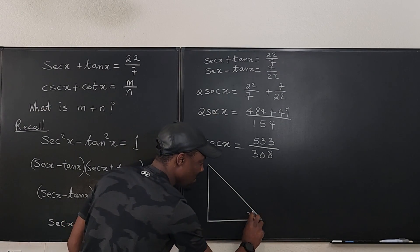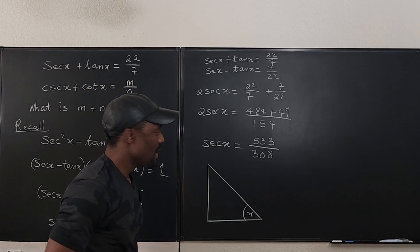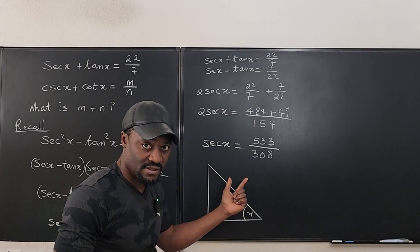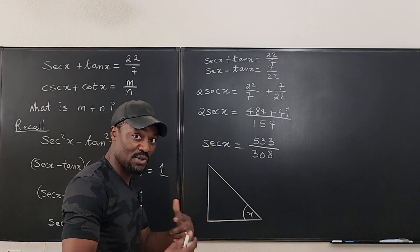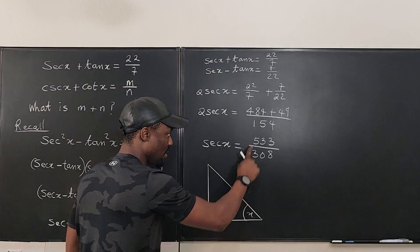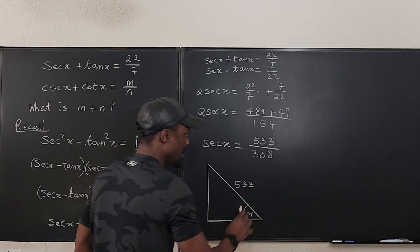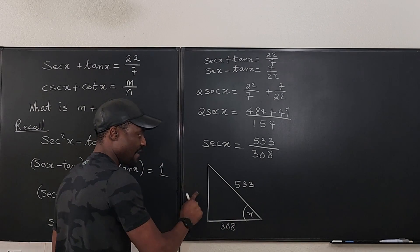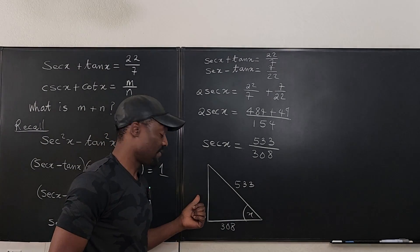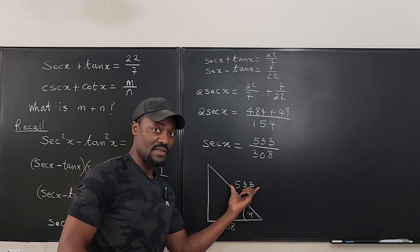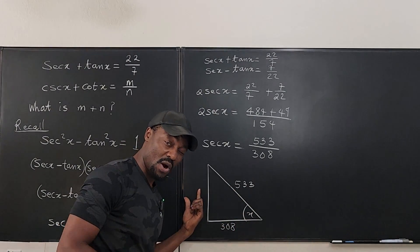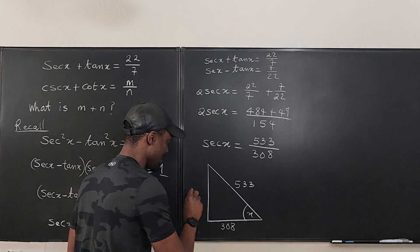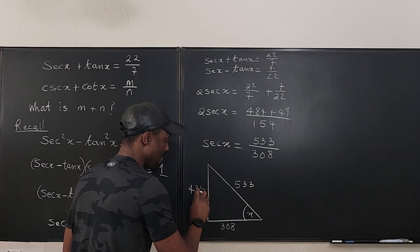So this is angle x. I know that secant by definition is hypotenuse over adjacent, right? The reciprocal of cosine. So this is my hypotenuse, which is 533. The adjacent side is going to be 308. And I have to use Pythagorean theorem to find this one, which is this one squared minus this squared. And that should give me 435. How did I know? Well, I already did it. So 435. And that's it.